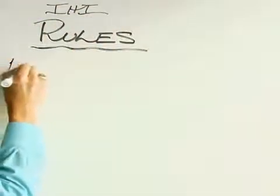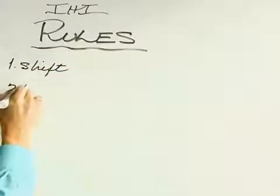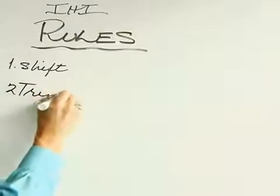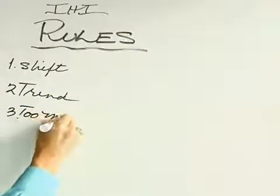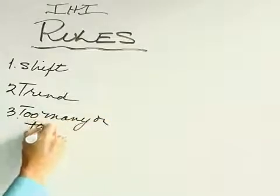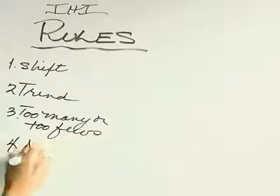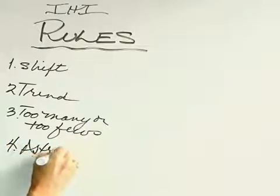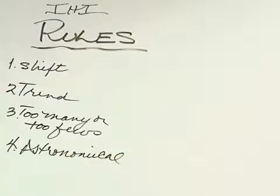They are basically a shift in the data, a trend in the data, whether you have too many or too few runs, and finally an astronomical data point. Let me explain each of these quickly.